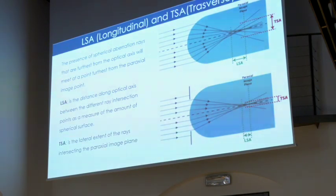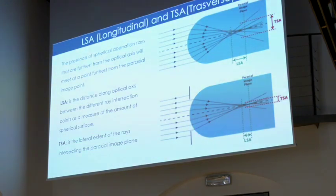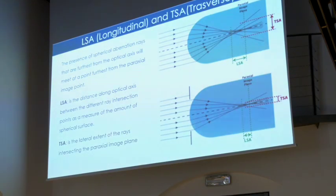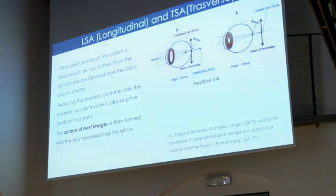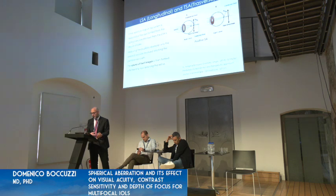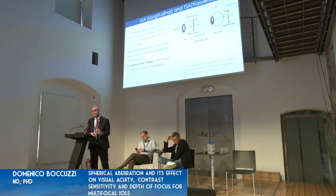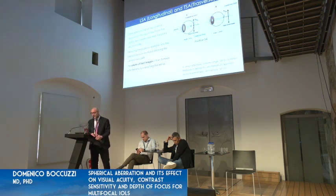When we talk about spherical aberration, we also need to distinguish between longitudinal and transverse spherical aberration. The LSA is the distance along the optical axis between the different ray intersection points. The transverse is the lateral extent of rays that intersect the paraxial image plane. If the aperture stop of the system is reduced so that rays further from the optical axis are blocked, then the LSA becomes smaller and we interact only with the central part of the optical axis. Reducing the pupillary diameter means only the paraxial, central rays are involved.